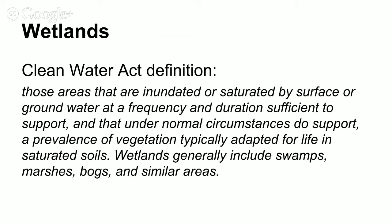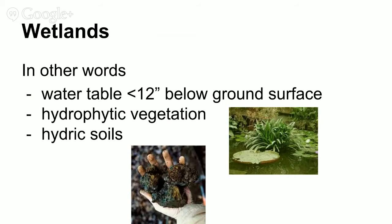Wetlands are defined by the Clean Water Act with a big, complicated definition, but the important part is that a wetland has a water table that is less than 12 inches below the surface of the ground, so the soil must be saturated. It must have hydrophytic vegetation, which is vegetation adapted to living with its roots wet, and hydric soils, which are soils that have formed while the ground was flooded.